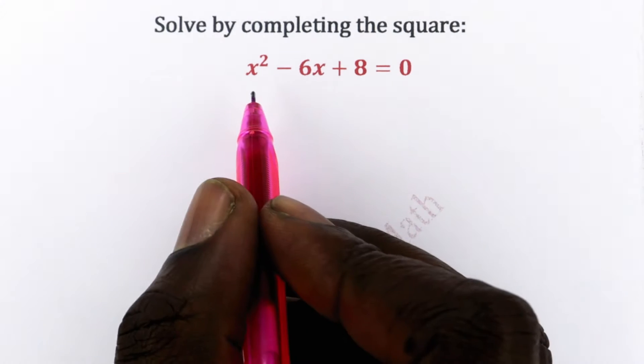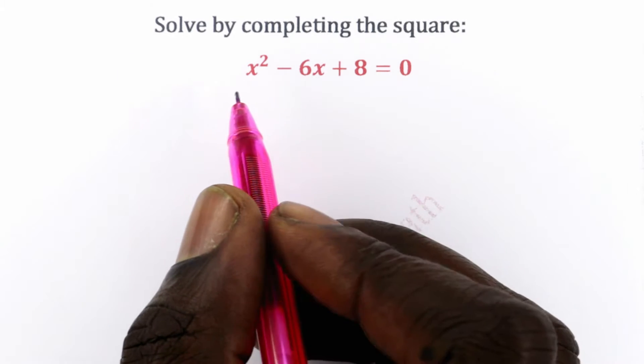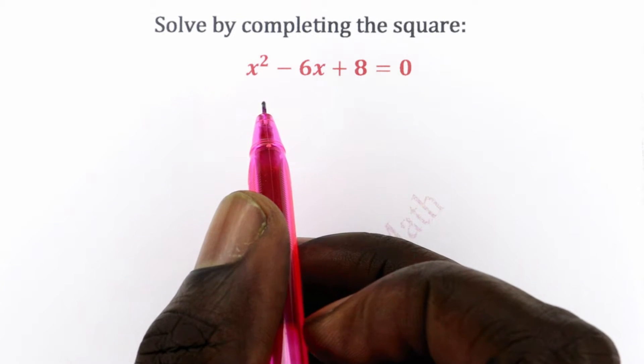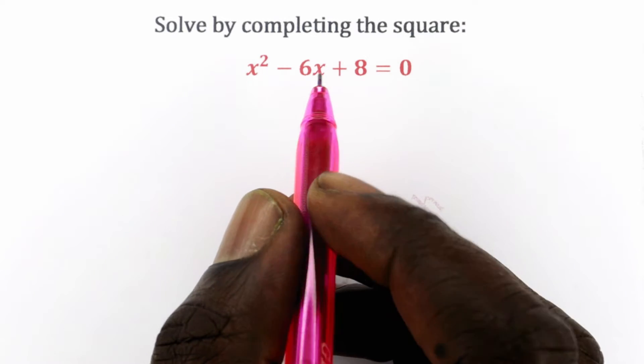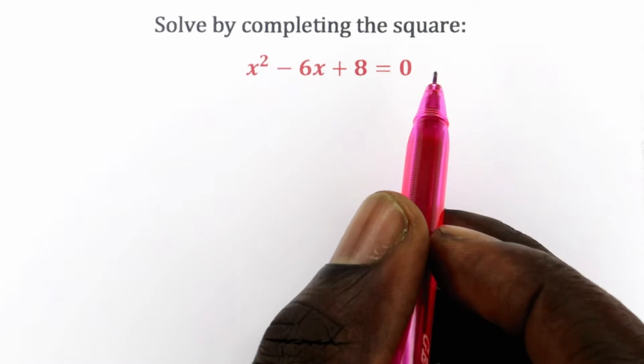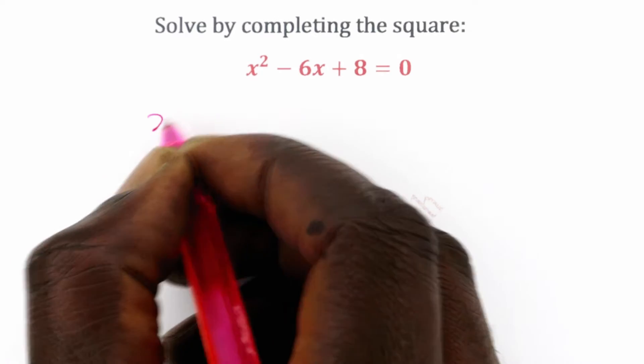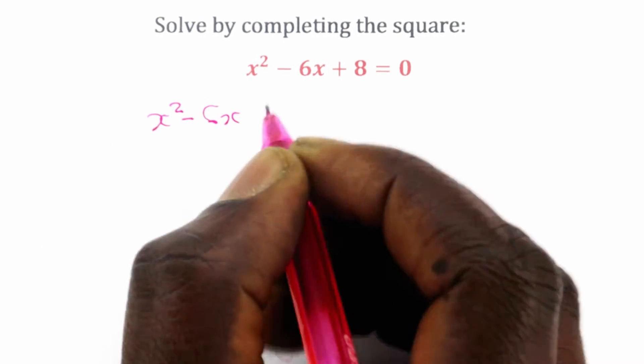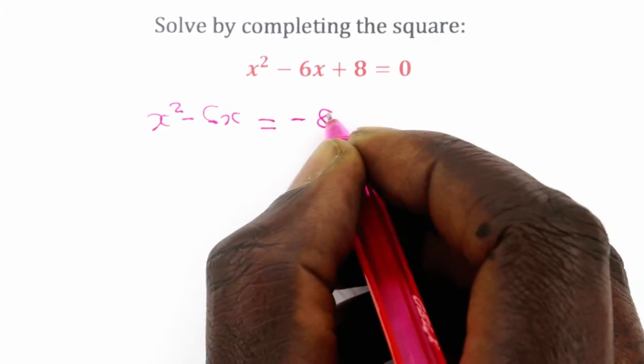So the first thing is to make sure that the coefficient of x squared is 1. In this case that is right there. Then the next step is to move the constant term to the right hand side. So we have x squared minus 6x is equal to negative 8.